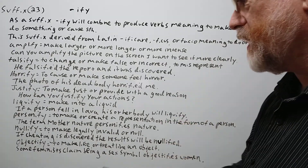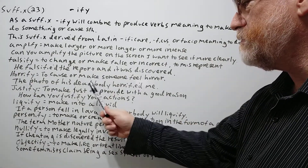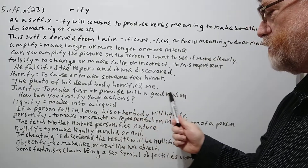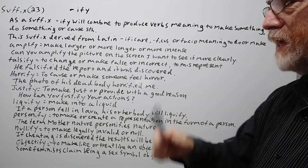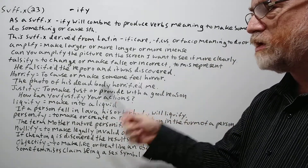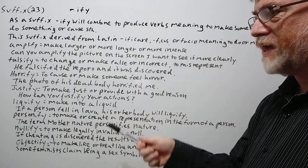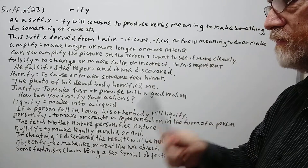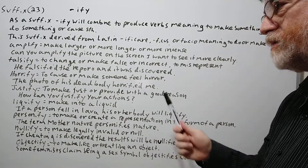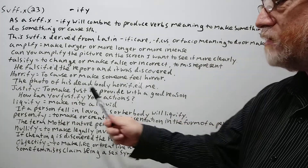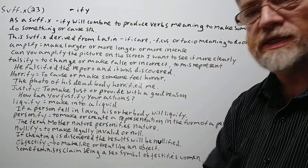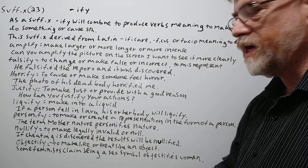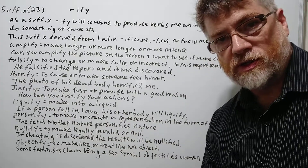Justify — to make just or provide with a good reason. So again, it's always like you make something happen, cause it. Justify means to make just. Here's our example sentence: 'How can you justify your actions?'